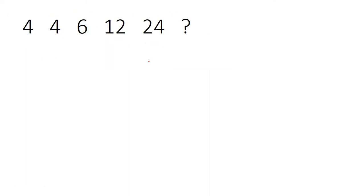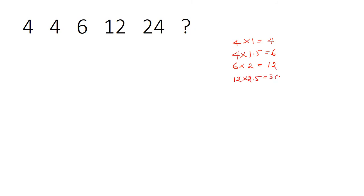Next question: 4, 4, 6, 12, 24. This may be a multiplication series. Checking: 4 into 1.5 is 6; 6 into 2 is 12; 12 into 2.5 should be 30, but the series shows 24 — so the multiplication pattern is not followed. As multiplication doesn't work, let's try taking the difference.